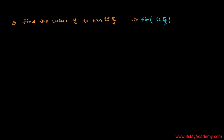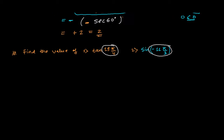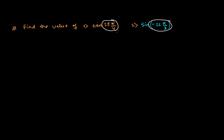Based on the concept of conversion of one trigonometric ratio form into another, and the sine rule of trigonometric ratios in different quadrants, we need to solve this question: find the value of tan(19π/4) and sine of negative 11π/3. These angles are given in radian form. To solve this type of problem, I'll show you three ways — use whichever you find easiest.